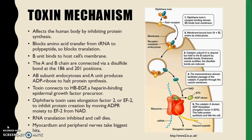When the toxin is released from C. diphtheriae, it is cleaved into two A and B chains. The chains are connected via a disulfide bond at the 186 and 201 positions. These chains are kept together upon reaching the cytosol. The toxin spreads throughout the body and the myocardium and peripheral nerves take the biggest hits. The toxin then connects to HB-EGF, or heparin-binding epidermal growth factor precursor. The host cell then endocytizes the toxin and the A and B chains are disconnected. The B chain stays behind and acts as the core within the endosome. Diphtheria toxin uses elongation factor 2, or EF2, to inhibit protein creation by moving the ADPR moiety to EF2 from NAD. RNA translation is then inhibited as the toxin ADP-ribosylates diphthamide, which prevents protein chains from continuing elongation.